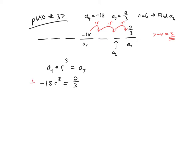I'm going to multiply both sides by negative 1 18th. And so I end up with r cubed equals, and I can simplify, and I get negative 1 over 27. So if I take the cubed root of both sides, I'm going to get r equals negative 1 3rd.